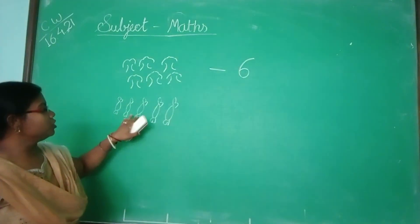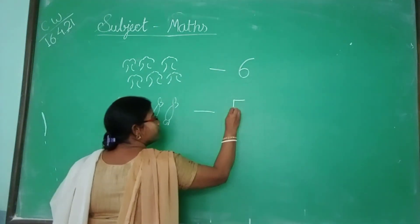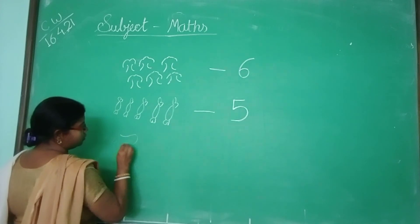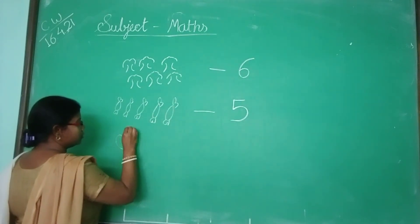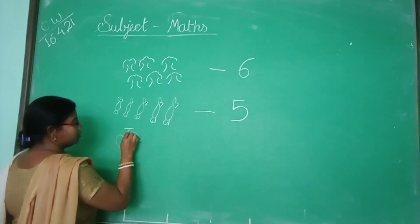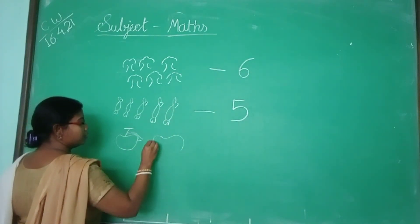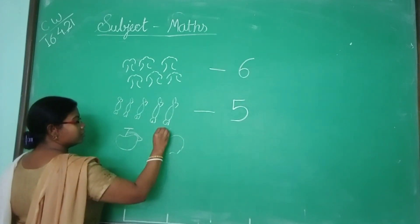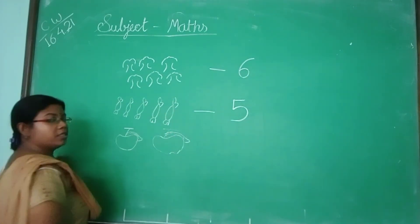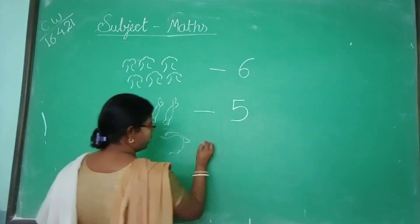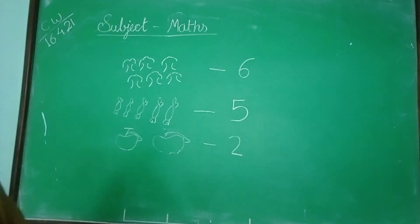See more examples. How many toffees? 1, 2, 3, 4, 5 — how many toffees are there? 5 toffees are there, so we will write number 5. How many toffees are there? Count: 1, 2 — so you write the number 2. This is called 'Count and Write.'